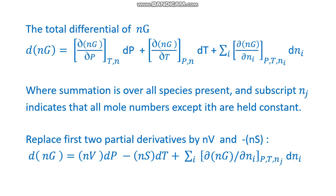Based on this, the total differential of nG can be written as d(nG) = [∂(nG)/∂P] at constant T,n into dP plus [∂(nG)/∂T] at constant P,n into dT plus Σi[∂(nG)/∂ni] at constant P,T,nj into dni.